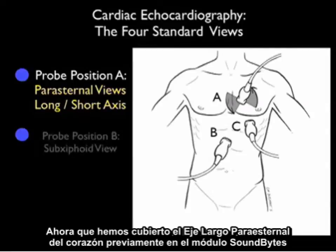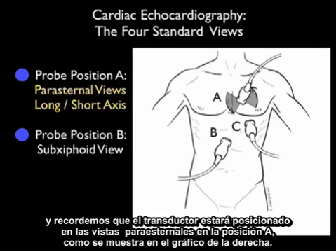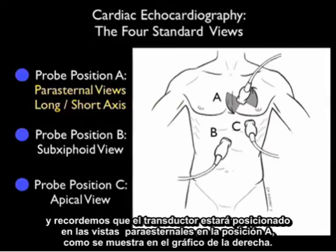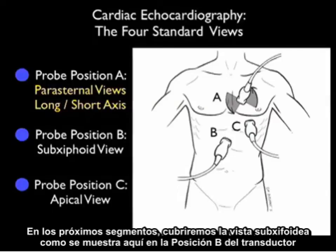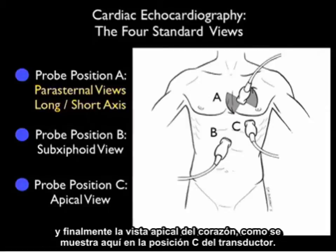We've covered the parasternal long axis view of the heart previously in SoundBytes module, and recall that the probe will be positioned for the parasternal views in position A as shown here in the pictorial to the right. In upcoming segments, we'll cover the subxiphoid view as shown in probe position B, and finally the apical view of the heart as shown here in probe position C.